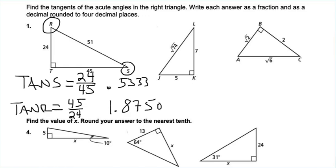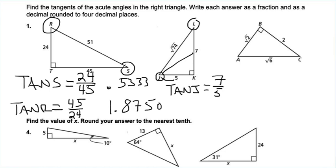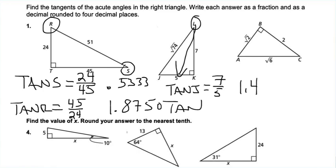For number two, we find tangent of J and tangent of L. What's opposite of J? That is 7. What is adjacent? That is 5. So tangent of J equals 7 over 5. Plugging 7 divided by 5 into the calculator gives 1.4. Now for the tangent of L, starting at angle L: what's opposite? That is 5. So tangent of L is 5 over 7, because the adjacent side is 7.